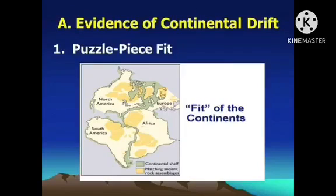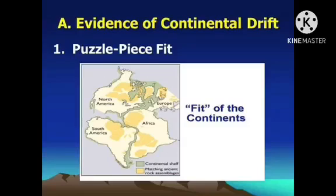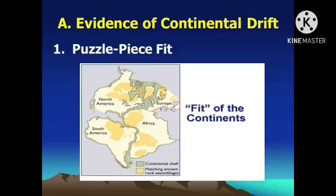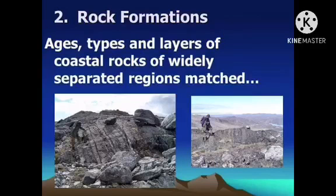The first evidence is the puzzle piece fit. It seems very impossible that the seven continents, currently thousands of miles apart, were once connected pieces of a supercontinent. The most visible and fascinating evidence is their shapes — the edge of one continent surprisingly matches the edge of another. South America and Africa fit together; India, Antarctica, and Australia match one another; Eurasia and North America complete the whole continental puzzle in the north.